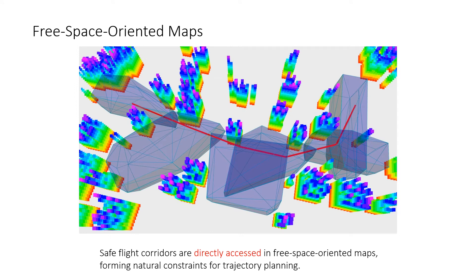Given a free space-oriented map, safe flight corridors can be directly accessed for any topological path, thus trajectory planners do not need to access huge volumes of map data.